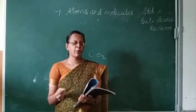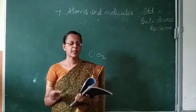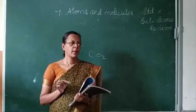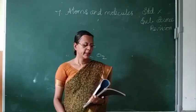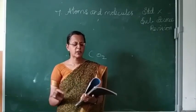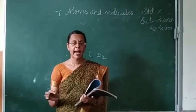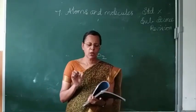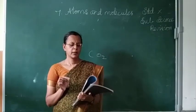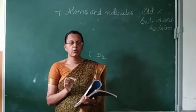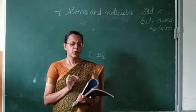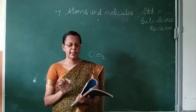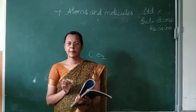Seventh question: If a molecule is made of similar kinds of atoms, then it is called a homoatomic molecule. Eighth: The number of atoms present in the molecule is called atomicity. Ninth: One mole of any gas occupies 22,400 mL at STP. Tenth: Atomicity of phosphorus is 4.